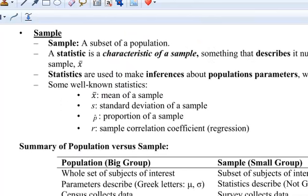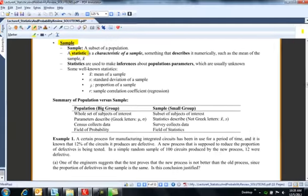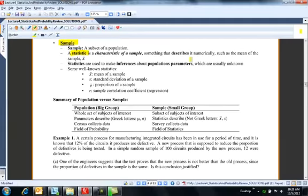From a population, we can get a sample, which is a subset of the population. When you compute a numerical summary on a sample, you get a statistic. It's just some characteristic of that sample — one number that summarizes something, such as the mean of a sample, which we would call x-bar.